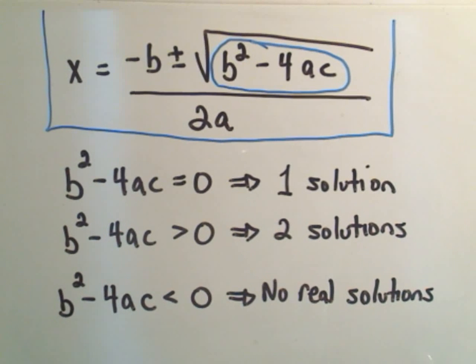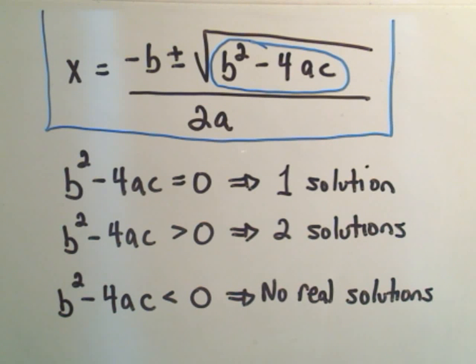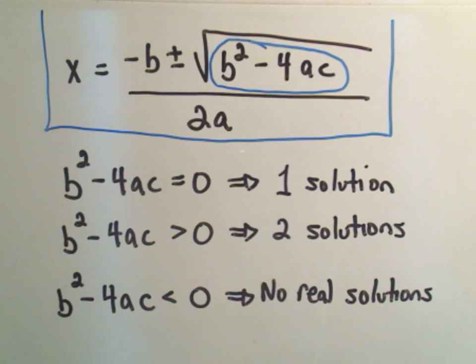And basically just by looking at b squared minus 4ac, you can determine whether your quadratic equation has one solution, two solutions, I should say one distinct solution, or two distinct solutions, or no real solutions.